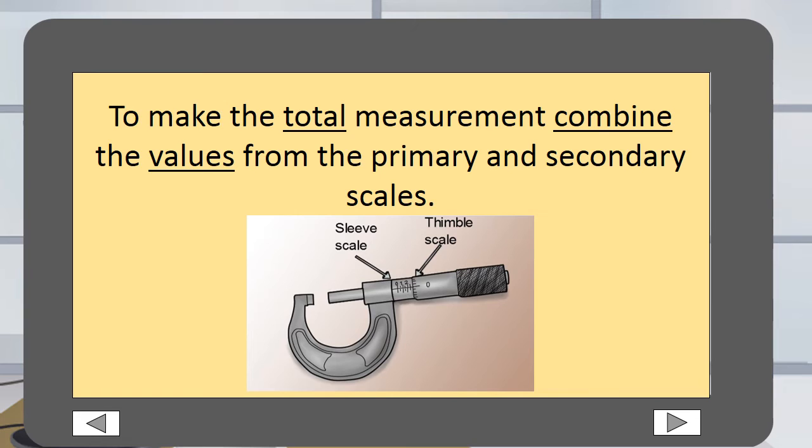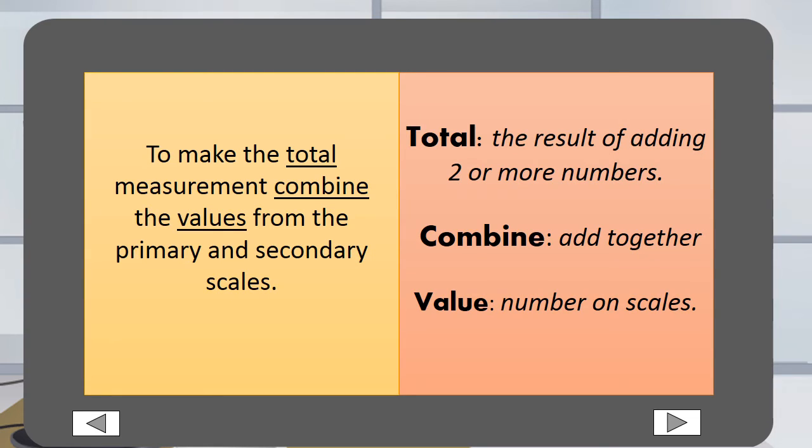To make the total measurement, combine the values from the primary and the secondary scales. Total is the result of adding two or more numbers. Combine is when you add something together. Value is the number you see on the scales.